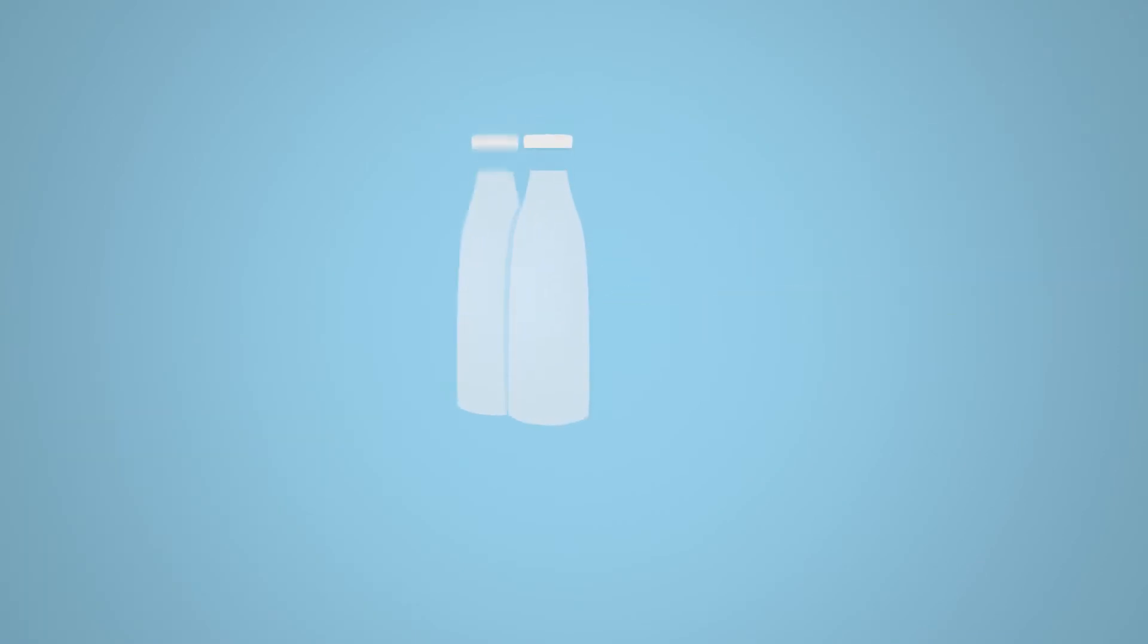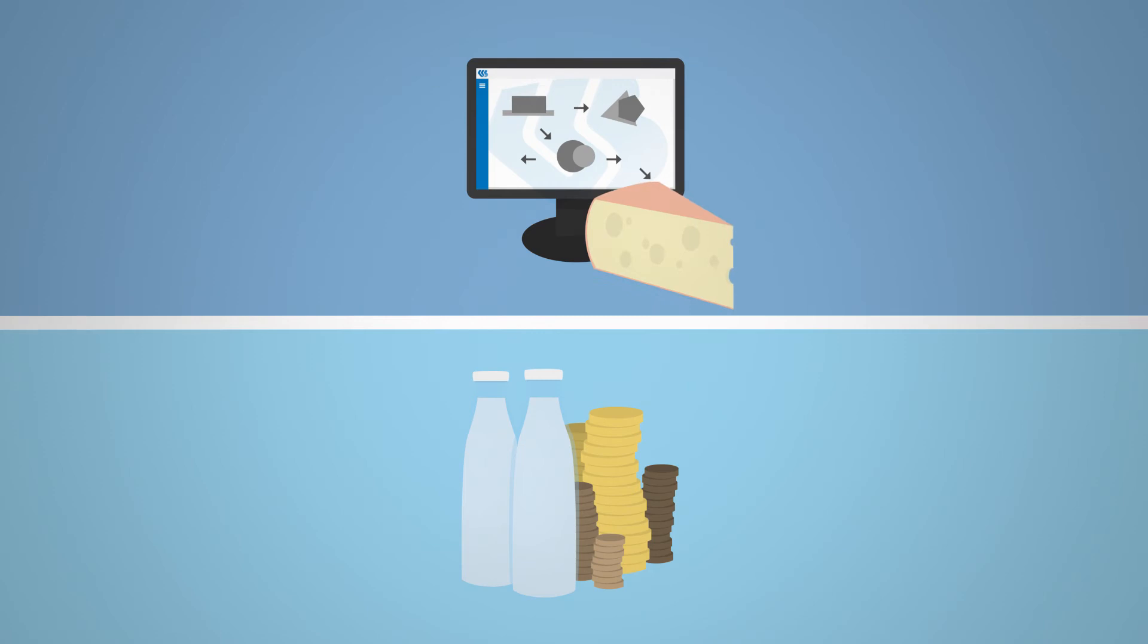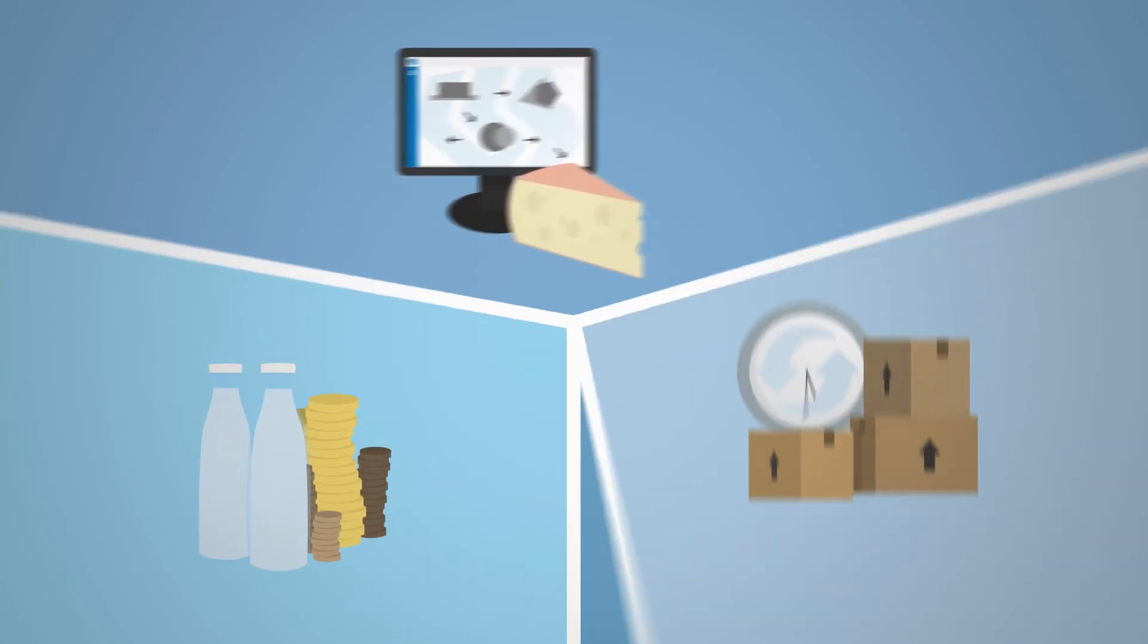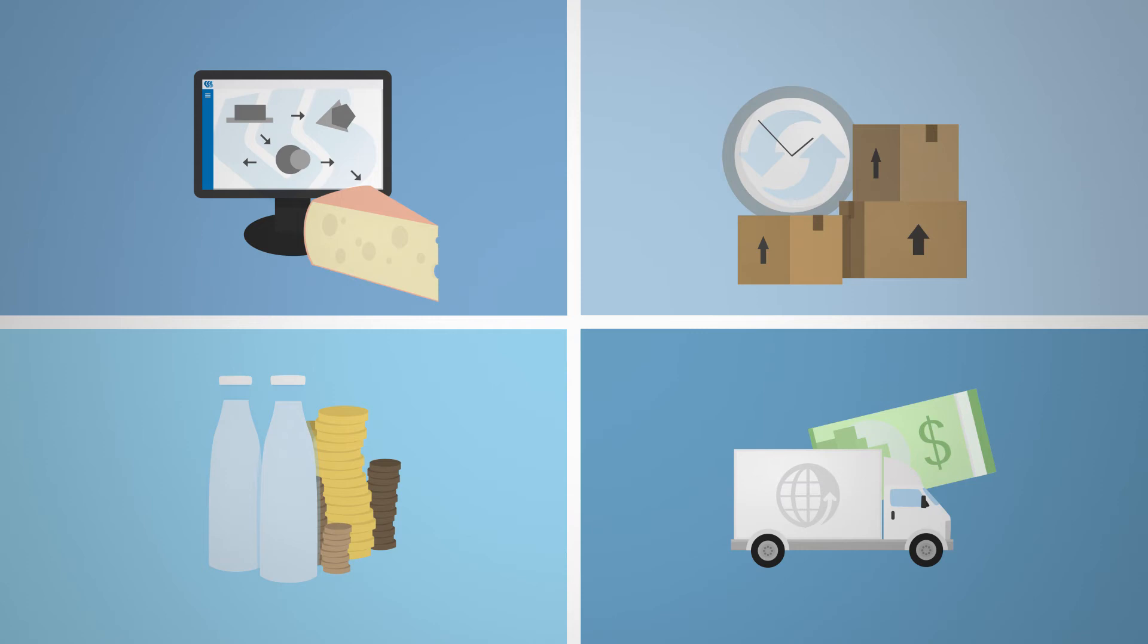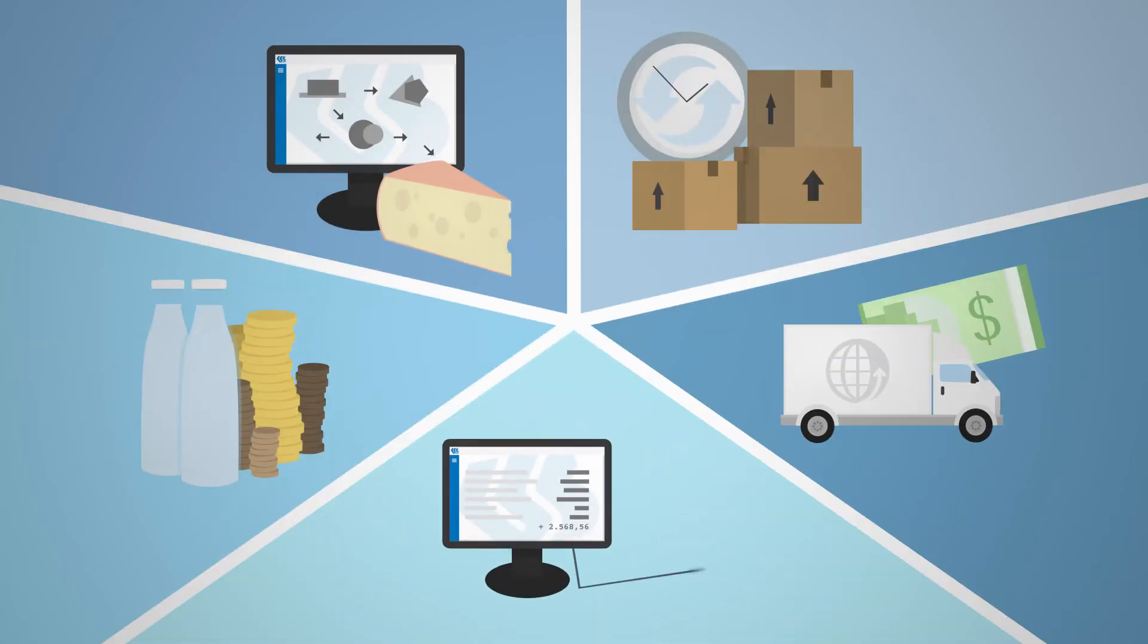It starts with procurement and receiving, followed by planning and production, via the inventory and traceability, to sales and dispatch, and up to billing and controlling.